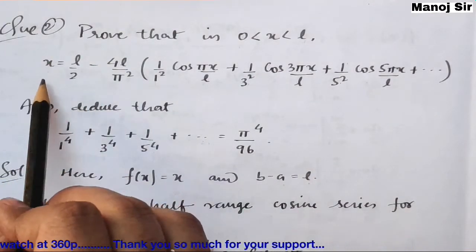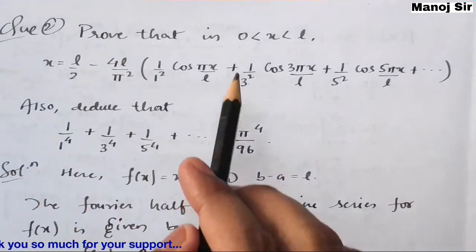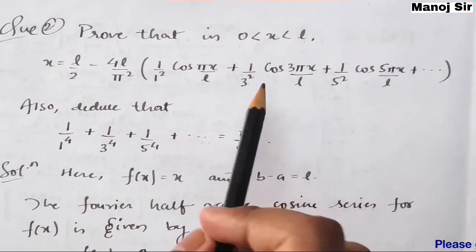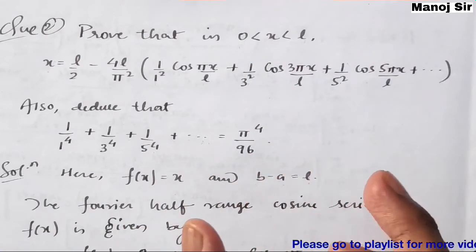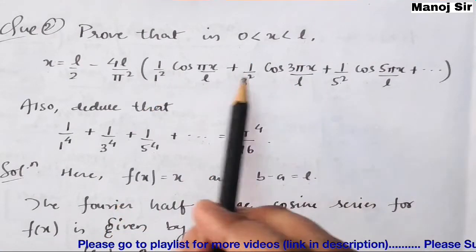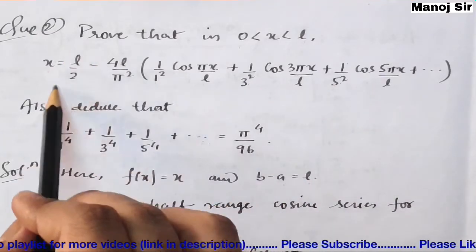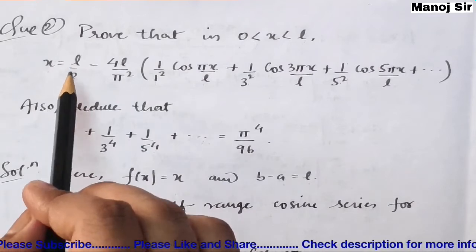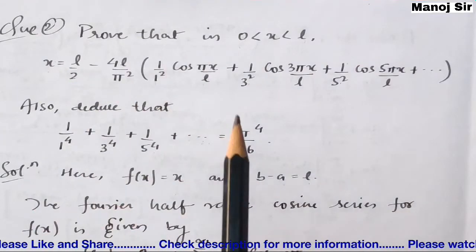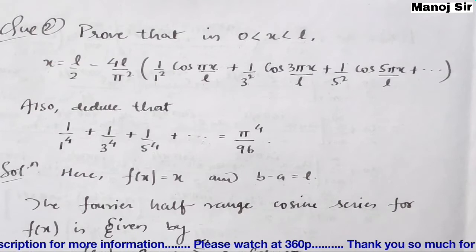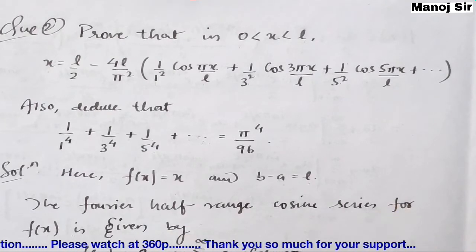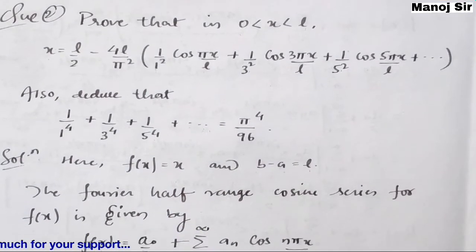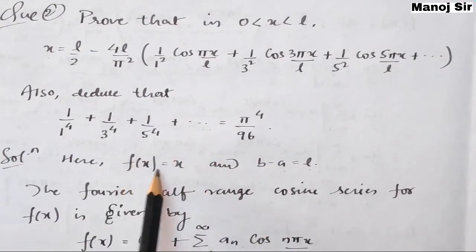The function is f(x) = x and the limit is from 0 to l. Here you can see it is a half-range, since the range is from 0 to l. We have cosine terms and a constant term — the constant corresponds to a₀ and the cosine terms correspond to aₙ. So this question belongs to the Fourier half-range cosine series.